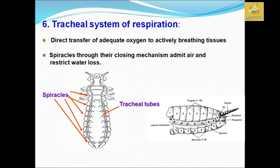Insects also have a tracheal system which transfers adequate oxygen directly to the breathing tissue through spiracles present in their abdomen. By closing and opening this mechanism, they admit air and also restrict water loss through the spiracles. This is how respiration takes place, and by direct delivery of oxygen they utilize their oxygen very effectively compared to other living organisms.